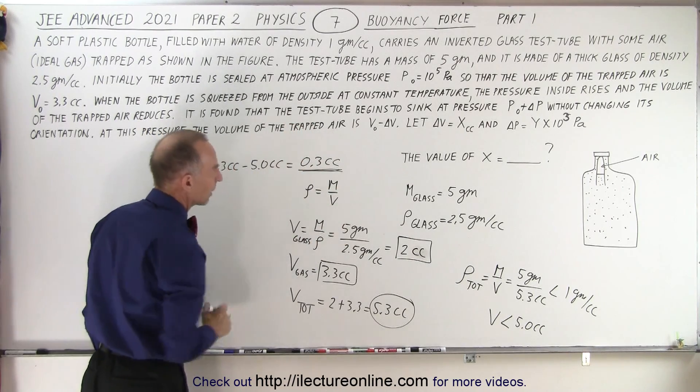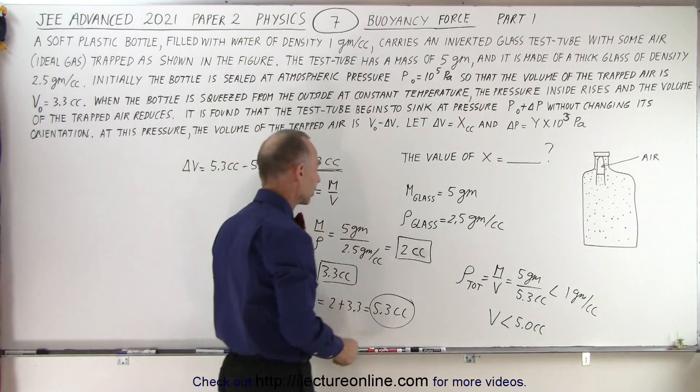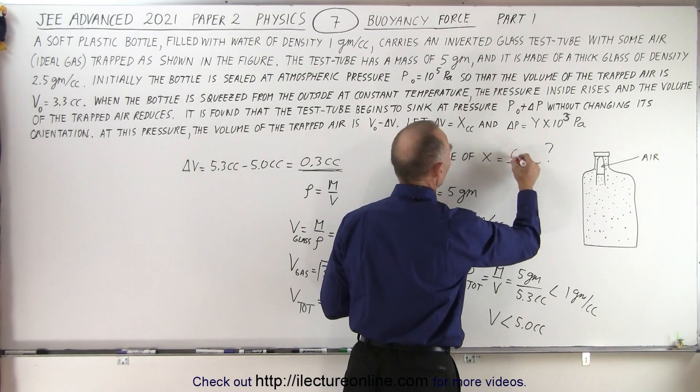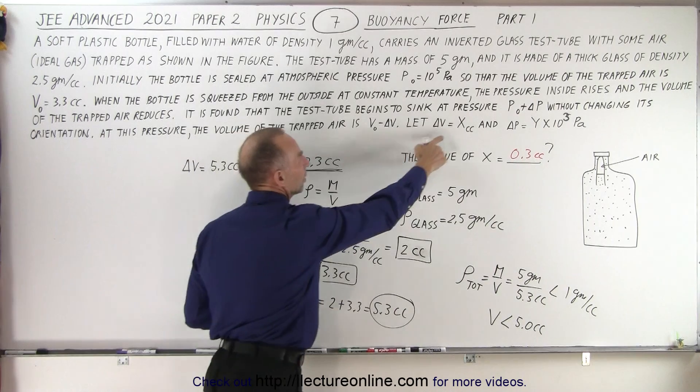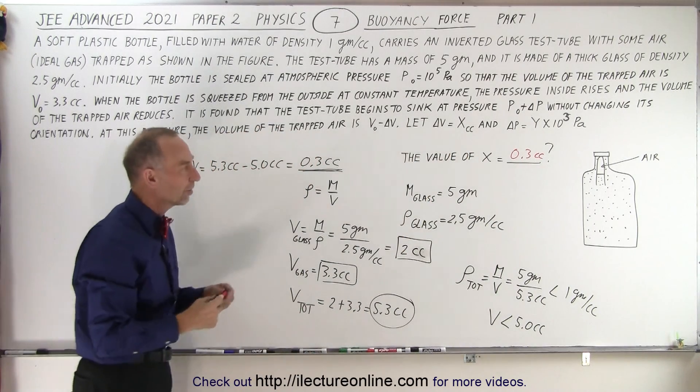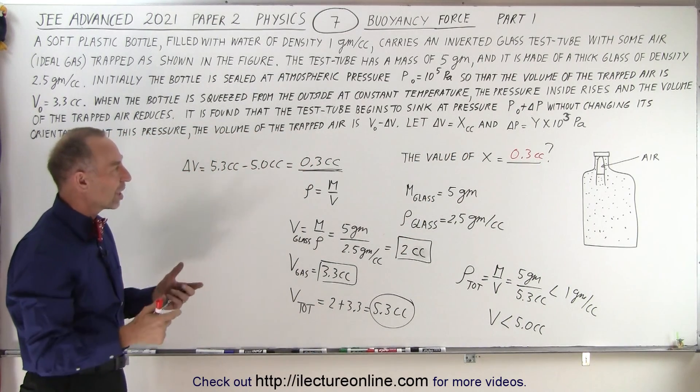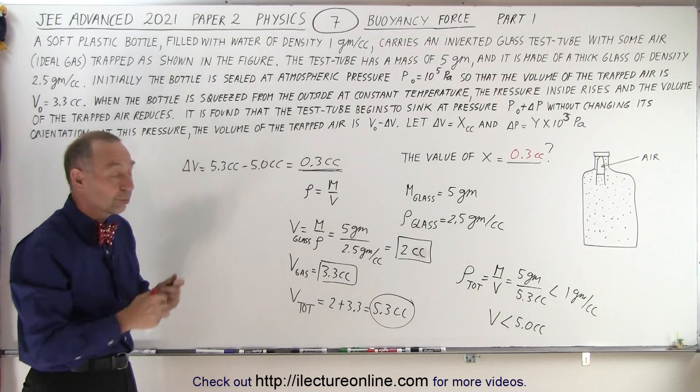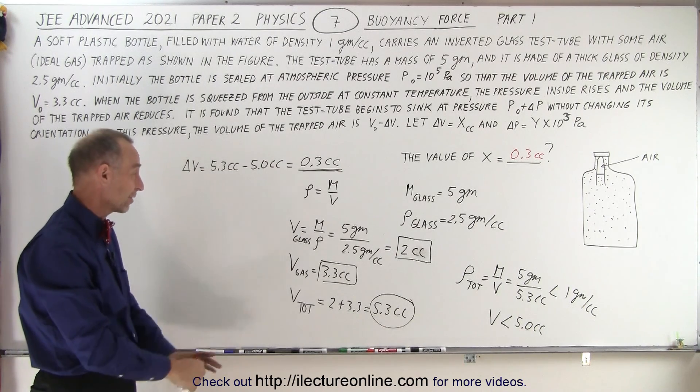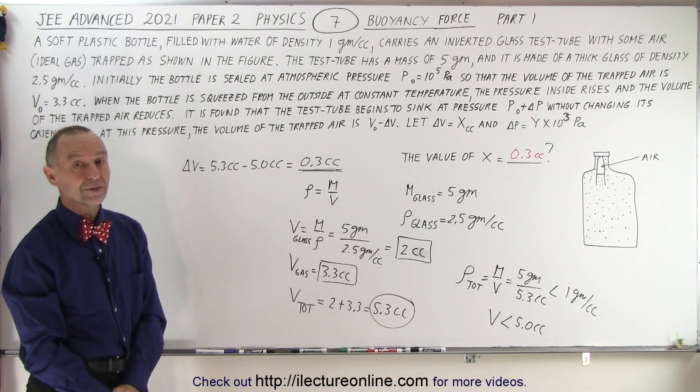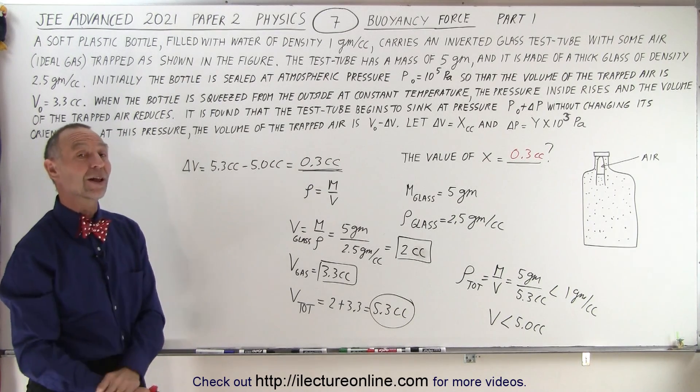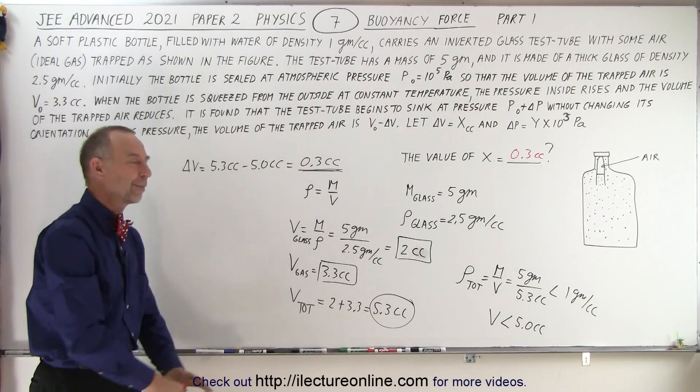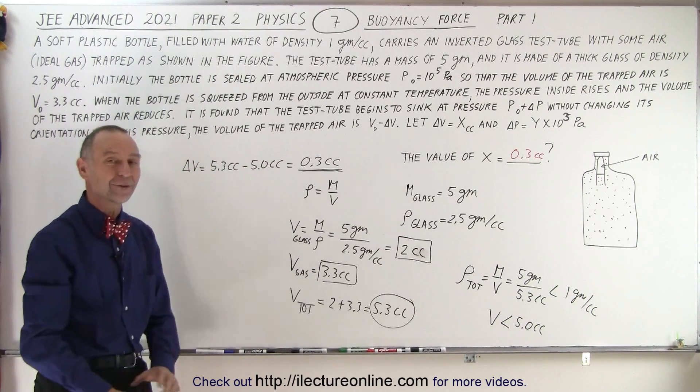That's the change in the volume we're looking for, for the test tube to start coming down. And so the answer that we're looking for is 0.3 cc's for the change in the volume for the test tube to start coming down. So you can see that this one you probably figure out in less than three minutes, give you some precious time to move on to the next problem and make up some of the lost time in the earlier harder problems, and that is how it's done.